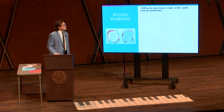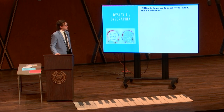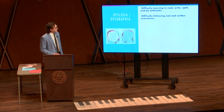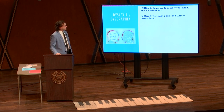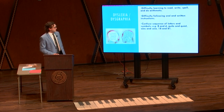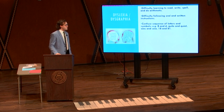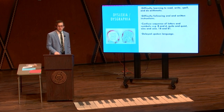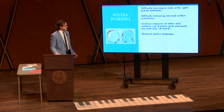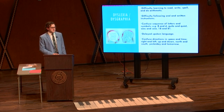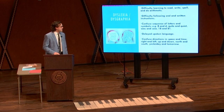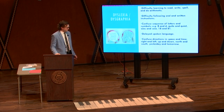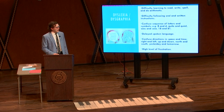I have highlighted some struggles that a student with dyslexia may have. They may have difficulty learning to read, write, spell, and do arithmetic. They may have difficulty following oral and written instructions. They may confuse sequences of letters and symbols, such as B and D, quite and quiet, was and saw, 18 and 81. They may have delayed spoken language. They may confuse directions in space and time — right and left, up and down, north and south, yesterday and tomorrow. And they may have a high level of frustration.